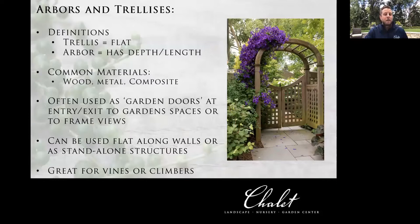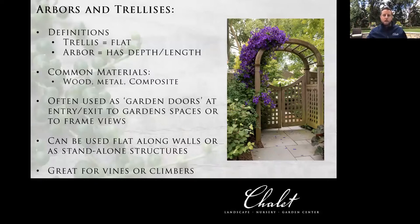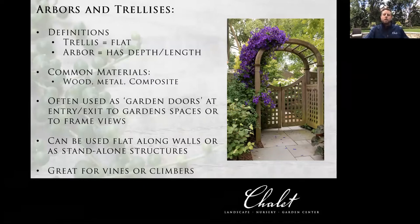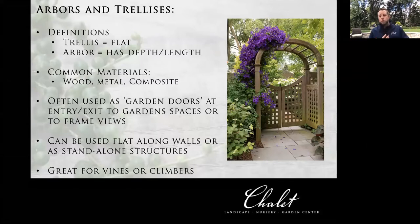Moving on to arbors and trellises. Starting with definitions: a trellis in general is going to be flat — something you'll usually see mounted up on a wall. They can be freestanding on a couple of posts, but typically you'll see them up against something. An arbor is what you'll see in the photo — it has some depth, it's three-dimensional, it's something you kind of walk through. Those are the easiest ways to determine whether you're talking about a trellis or an arbor.